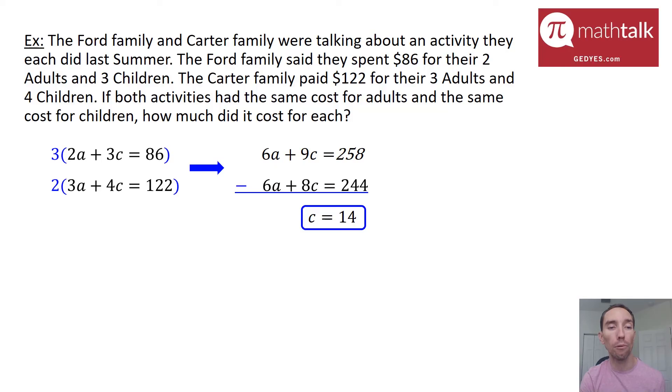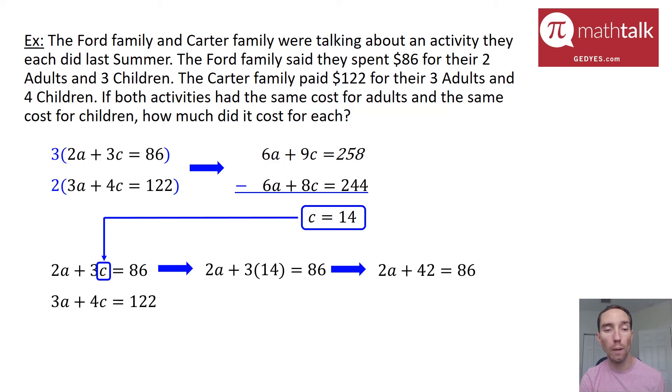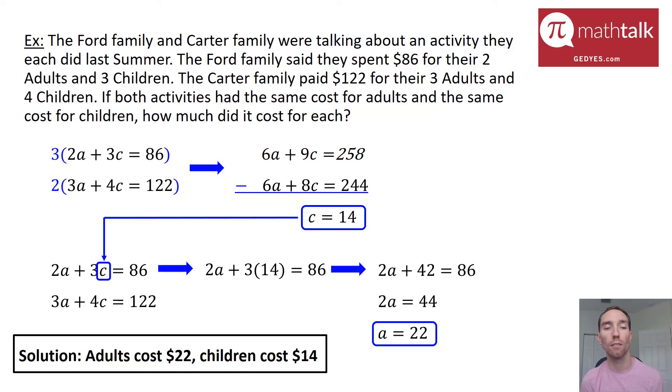I can use that value to go ahead and plug it into one of the equations that I started out with. I'm going to choose the top equation to plug it into just because the numbers are a little bit smaller. So when I do that, I get 2A plus 3 times 14 equals 86. 2A plus 42 is 86. I'm going to subtract 42 from both sides to get 2A by itself. I get 2A equals 44. And then I'm going to divide both sides by 2 to get A equals 22. So now I know the adults cost $22 each and the children cost $14 each for the activities that these families went on.